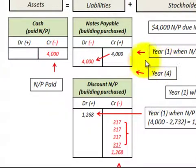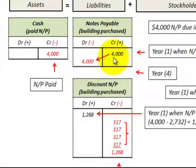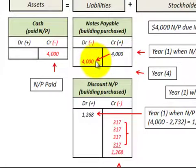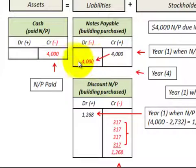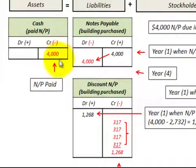When we pay the notes payable at the end of the fourth year, we debit notes payable for $4,000. The associated credit amount is to cash, where we reduce cash by $4,000.